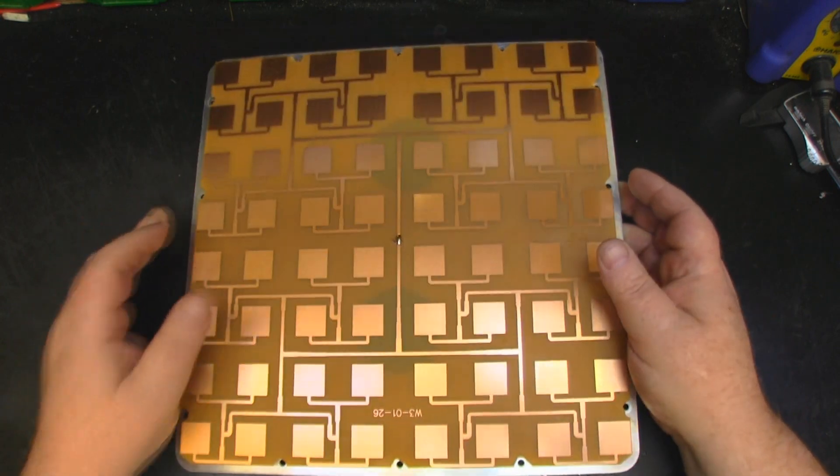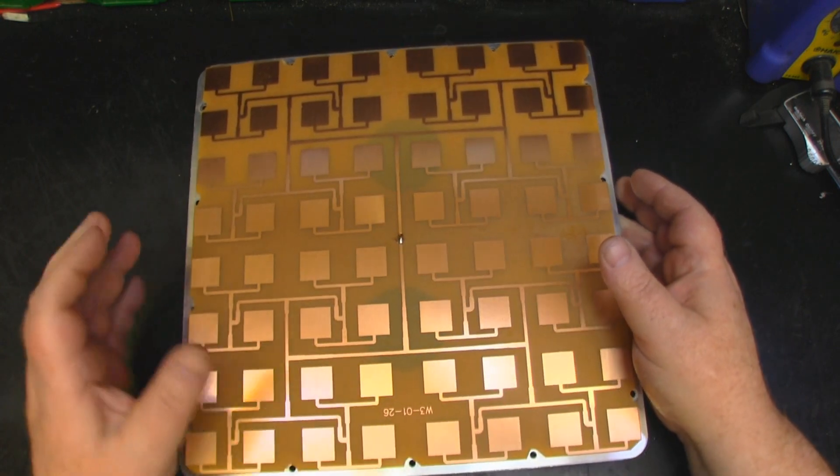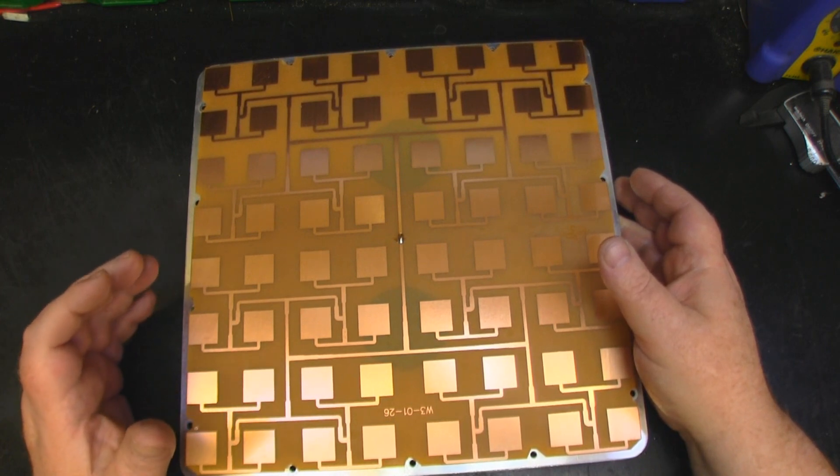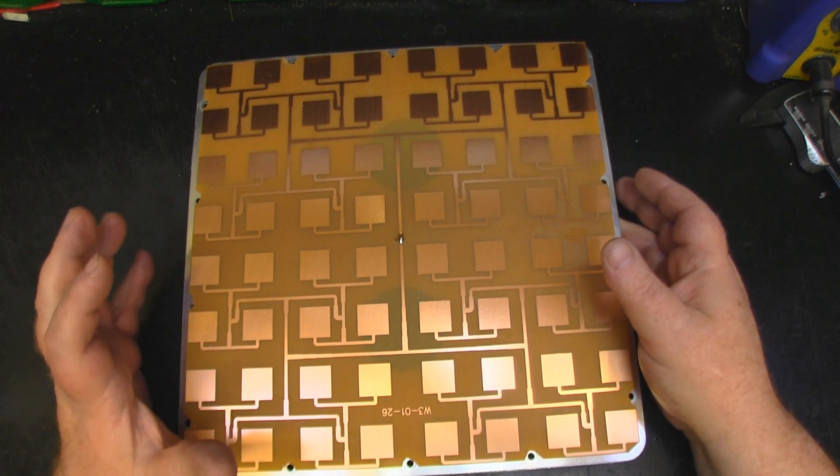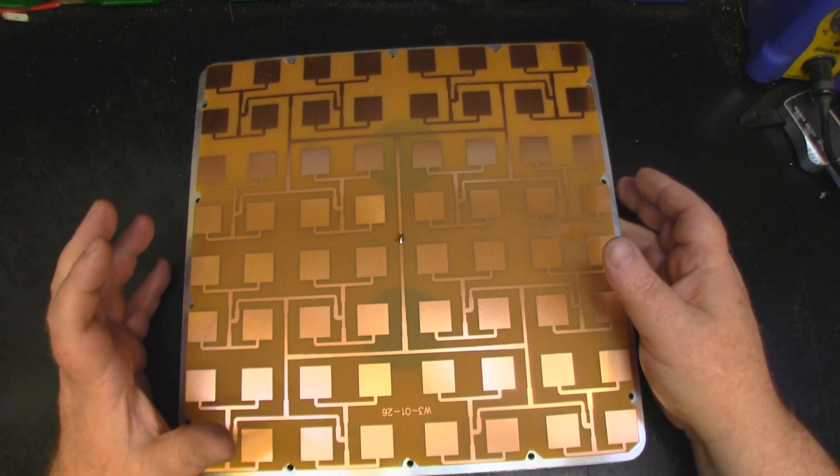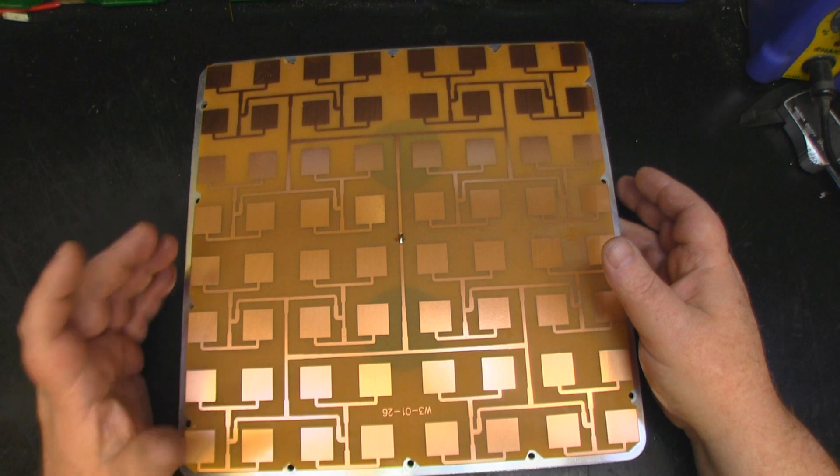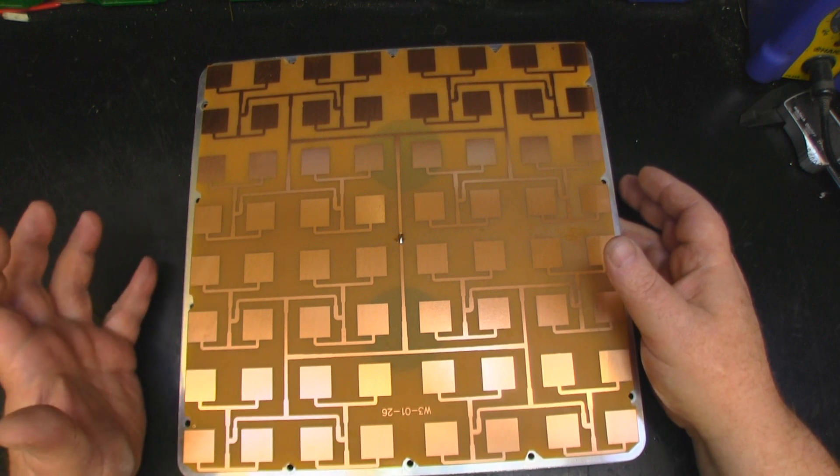Straight off the bat, if you want to talk about gain at 5 gigahertz Wi-Fi, this panel antenna is probably working in the 20s, maybe 21 dB of gain. At 2.4 gigahertz lower, probably about 16 dB of gain, maybe 15 dB of gain.